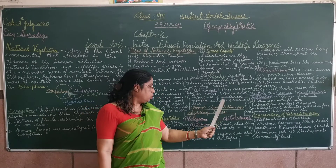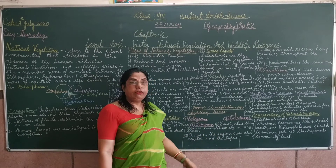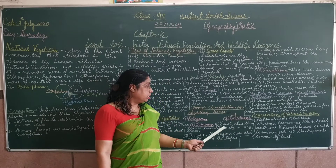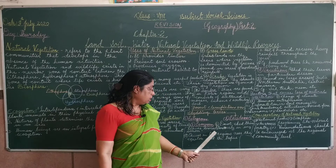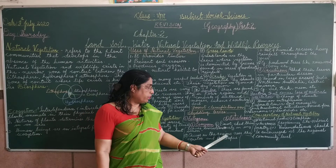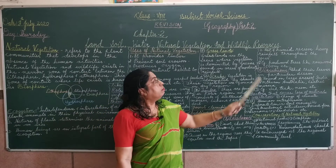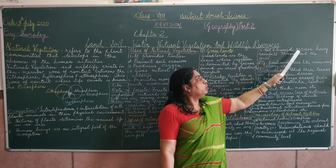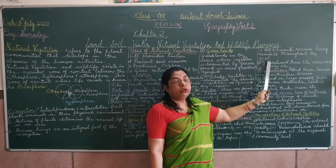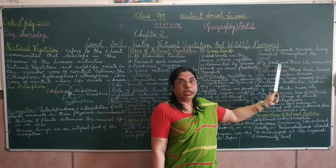Forest classification based on shedding of leaves divides them into two types: evergreen forest and deciduous forest. Evergreen forests do not shed their leaves simultaneously in any season. They occur in regions near the equator and the tropics, are hot and humid, and receive heavy rainfall throughout the year. Examples include hardwood trees like rosewood, ebony, etc.